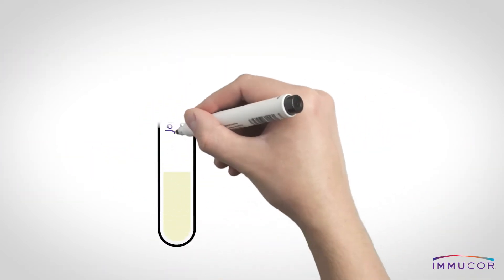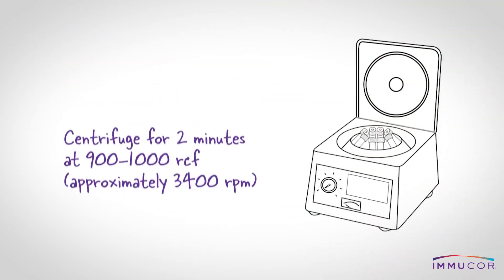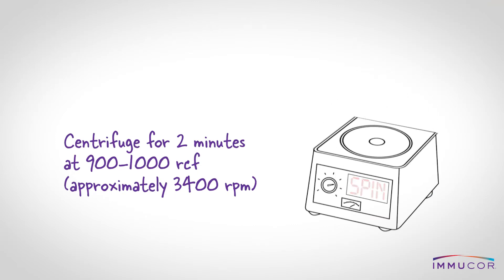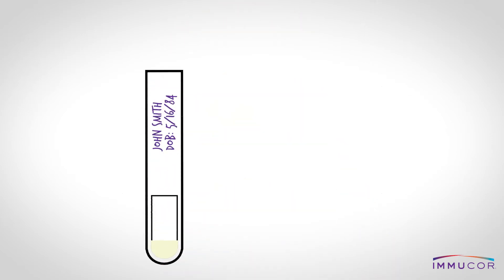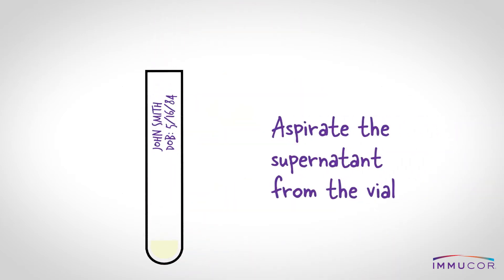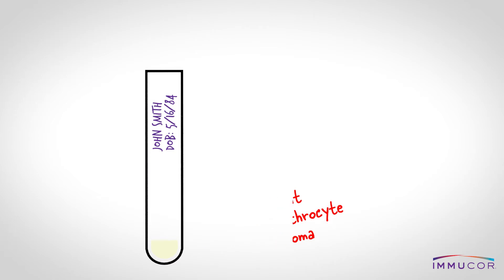Label a REST vial with the patient or donor's information, and then centrifuge the vial for two minutes. After centrifugation, completely aspirate the supernatant from the vial. Once the supernatant is removed, only the rabbit erythrocyte stroma remains in the bottom of the tube.